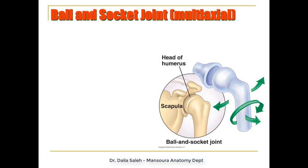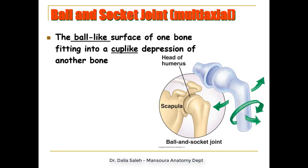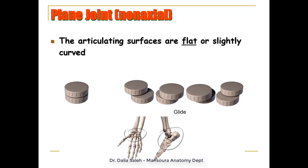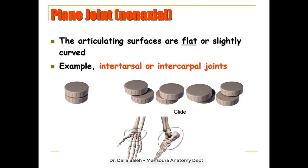In ball and socket joints, which are multi-axial, there is a ball-like surface of one bone that fits into a cup-shaped depression of another bone — for example, the shoulder joint. This type allows movement in multiple directions: flexion and extension, adduction and abduction, medial rotation and lateral rotation, and combining all of these movements gives circumduction. Plane joints, also called no-axial or gliding joints, have flat or slightly curved articular surfaces that allow only gliding or sliding over each other, for example the intertarsal or intercarpal joints.